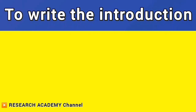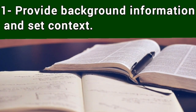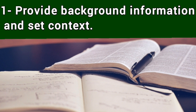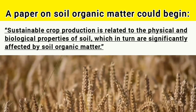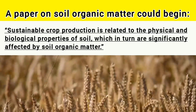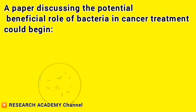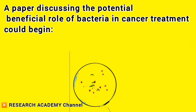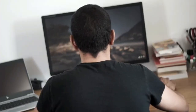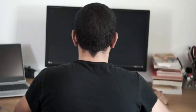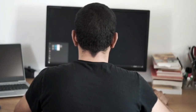To write the introduction section, there are four steps. Step 1: Provide background information and set context. This initial part prepares readers for more detailed and specific information to be provided later. The first two sentences are usually broad. For example, a paper on soil organic matter could begin: 'Sustainable crop production is related to the physical and biological properties of soil, which in turn are significantly affected by soil organic matter.' A paper on bacteria in cancer treatment could begin: 'The role of bacteria as an anti-cancer agent has been recognized for nearly a hundred years.' Note that the introduction should not be too broad — it should refer to organic matter in the soil or the role of bacteria, not agriculture or cancer in general. Once you have entered the first sentence of the wide field, the next sentence can refer to the specific region within that field.